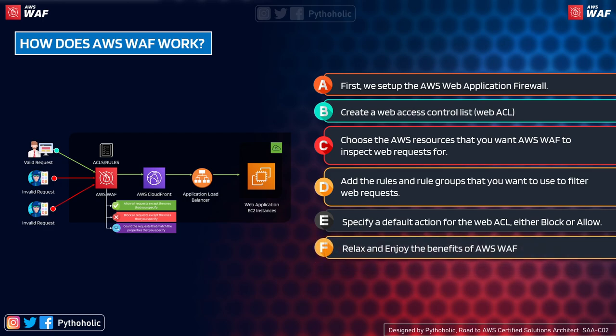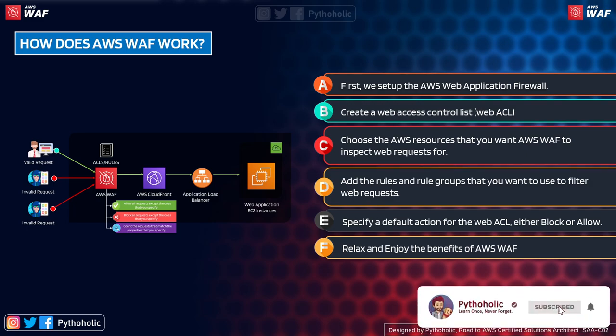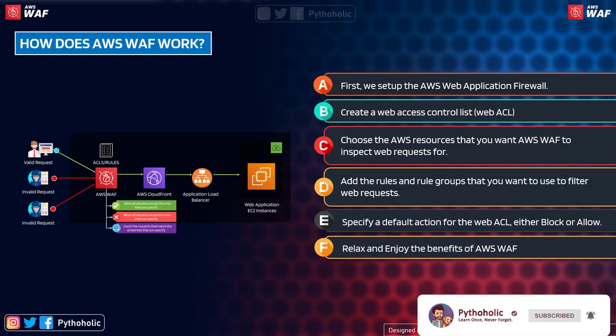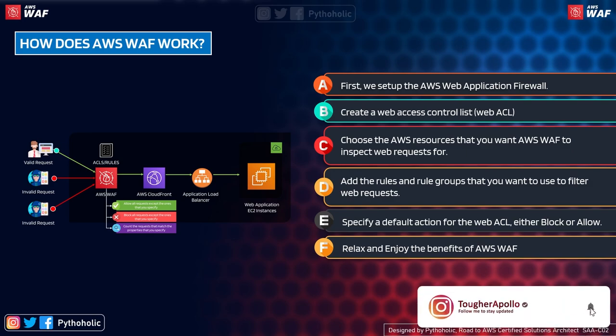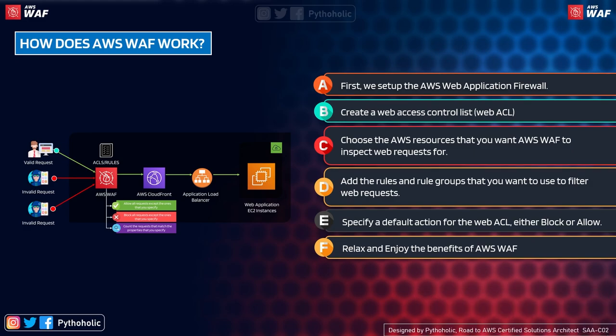To configure AWS WAF: first, create a Web ACL; then choose the AWS resources you want WAF to inspect requests for, such as CloudFront, a load balancer, or GraphQL APIs; next, add the rules and rule groups to use as filters; then assign a default action for the Web ACL — either block or allow; and finally wait for your application to receive requests and enjoy the benefits of AWS WAF.